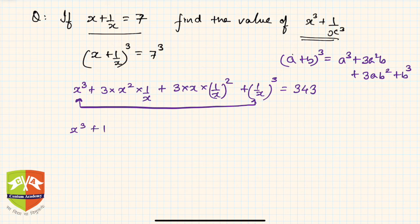Now again, you can take some common terms here. If you see, this is nothing but 3 is common, x is common, and 1 by x is also common. Left over is x here and here 1 by x, and this is equal to 343.